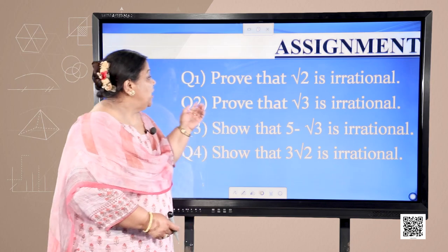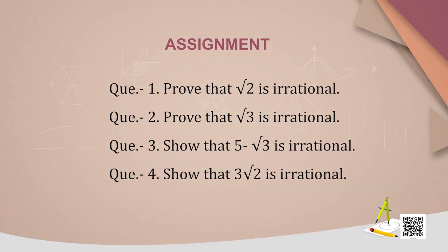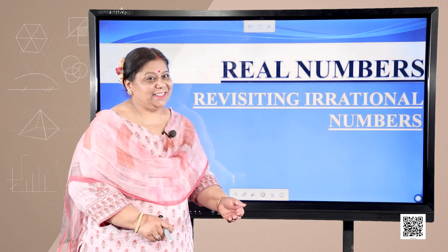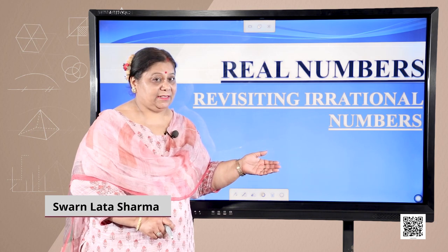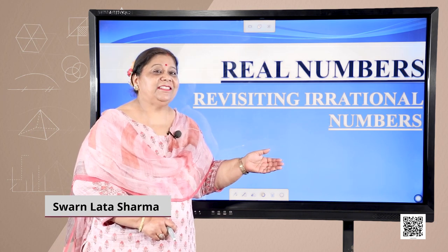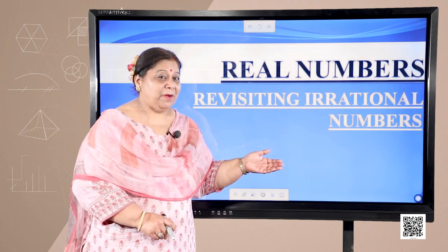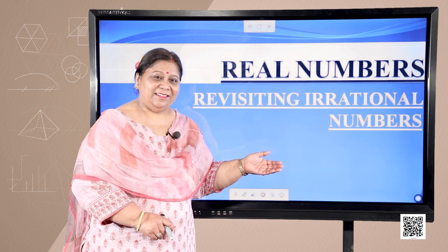Now it's time for your assignment. Question 1: prove that √2 is irrational. Question 2: prove that √3 is irrational. Question 3: show that 5 − √3 is irrational. Question 4: show that 3√2 is irrational. We have learned in this episode how to prove the irrationality of numbers. Please do these homework questions to practice and learn the concept. Thank you.